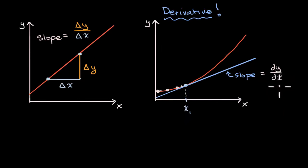Now there's other notations. If this curve is described as y is equal to f of x, the slope of the tangent line at that point could be denoted as equaling f prime of x one.